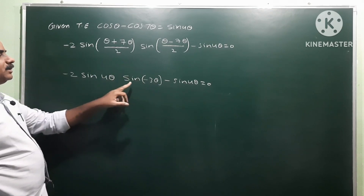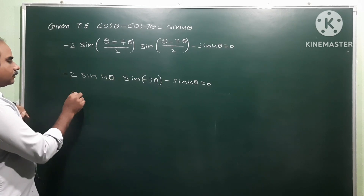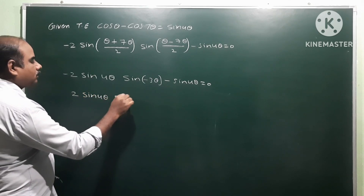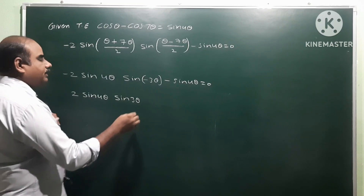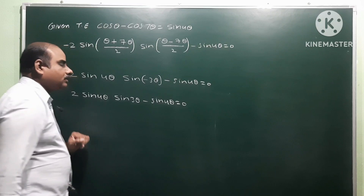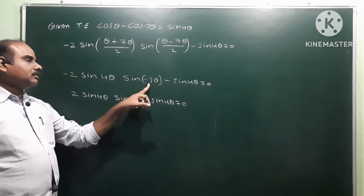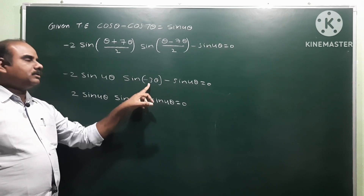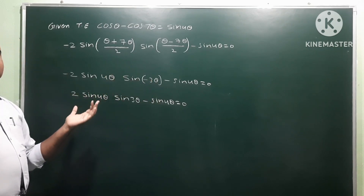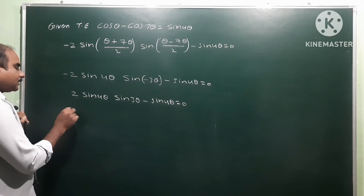Since sine(−3θ) equals minus sine 3θ, we substitute. Minus times minus gives plus. So the expression becomes 2 sine 4θ times sine 3θ minus sine 4θ equals 0. Now take sine 4θ as common factor.